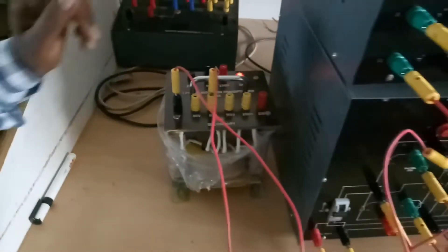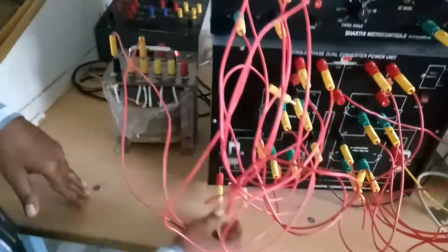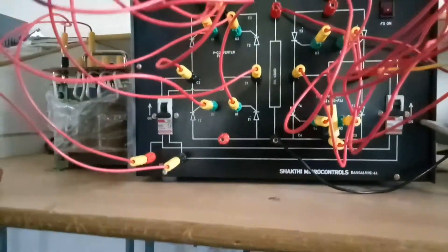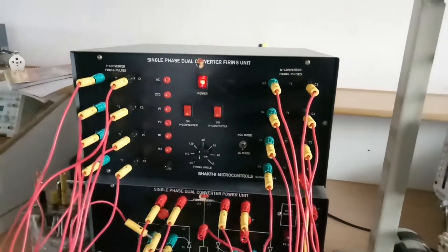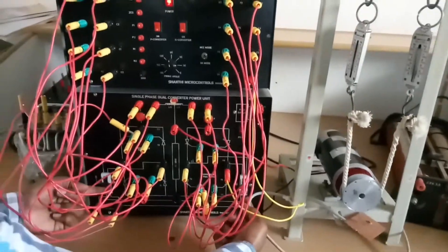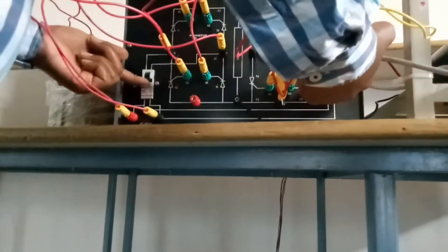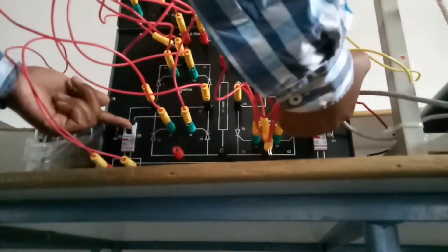230 volts supply for transformer. After that, 60 volts we give for this. Now 60 volts is given for this. After that, circulating current mode we are providing. Now we are switching on both converters at a time. Now both are coming.